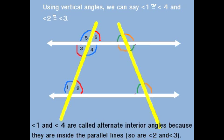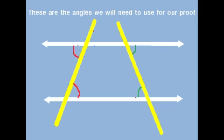I drew another transversal on the right, and this transversal has the same thing happening. You can see the alternate interior angles in green on the inside of the parallel lines and in orange. There are other angles that are congruent, but we're only looking at the alternate interior angles for this particular proof.